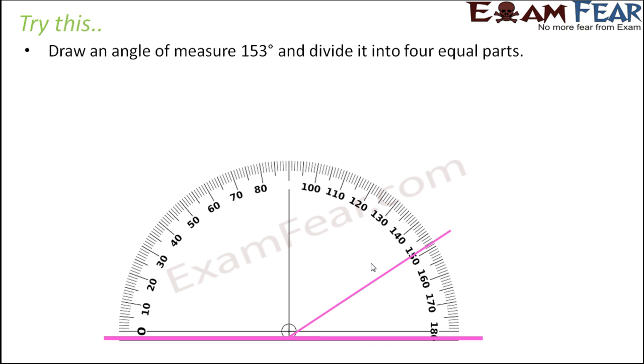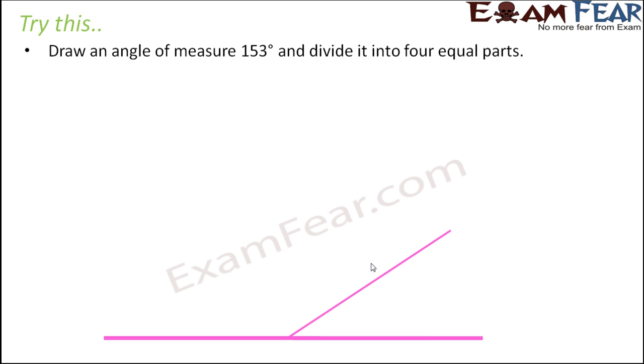So for 153, let's use the protractor and draw an angle of 153 degrees. Now we have to divide it into 4 equal parts. So how do we divide an angle into 4 equal parts? By angle bisector.